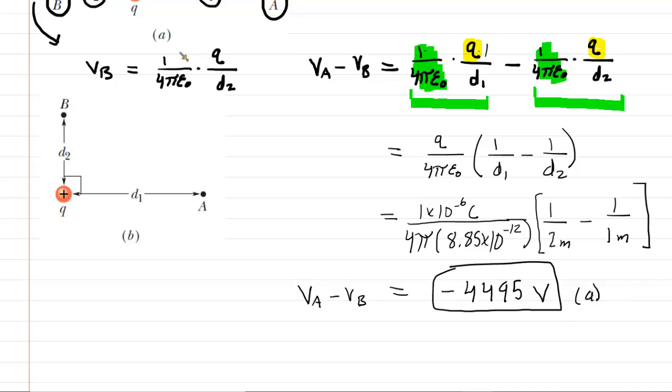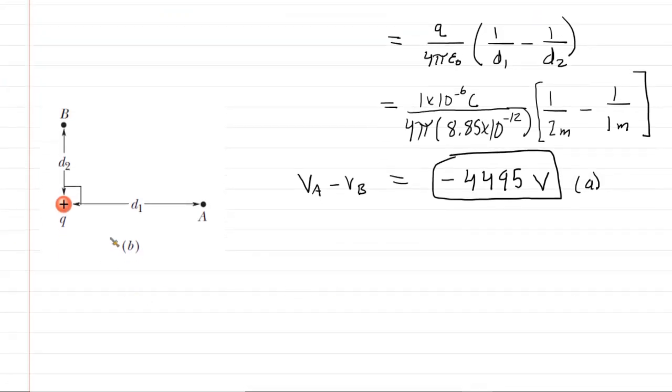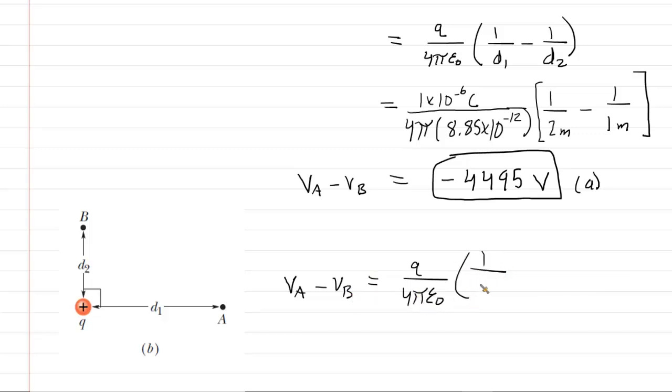Now in part B, which we can see over here, the locations have been reconfigured. So they're no longer diametrically opposite one another, they're situated as shown in the diagram. And we would still find the electric potential difference, VA minus VB, in the same manner. So we would still have VA minus VB equals the charge over the constant times 1 over D1 minus 1 over D2.